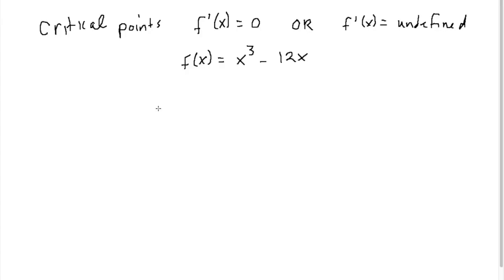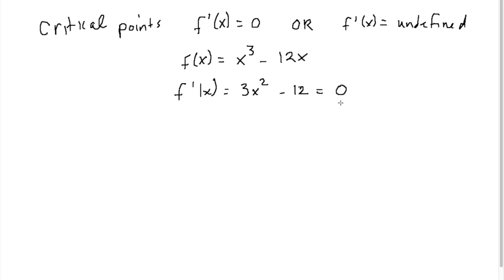If you have the graph in front of you, you can just look at it and tell what the critical points are. But if you don't have the graph in front of you, you need to take the derivative yourself. So f prime of x is equal to 3x squared minus 12. Then you'll set the derivative equal to 0, because you're trying to find where the derivative of this function equals 0.